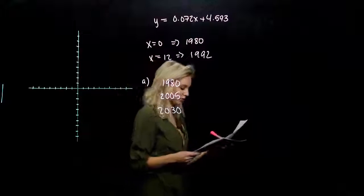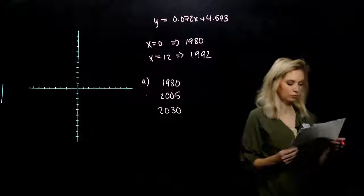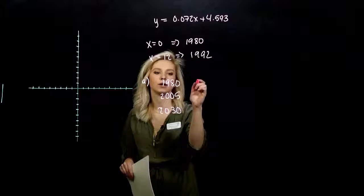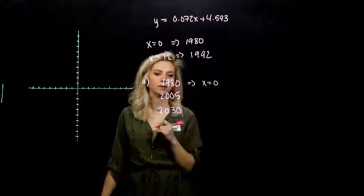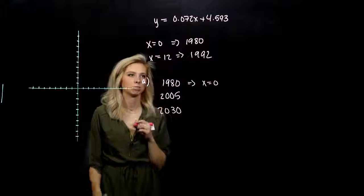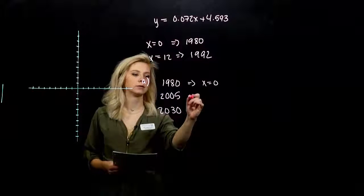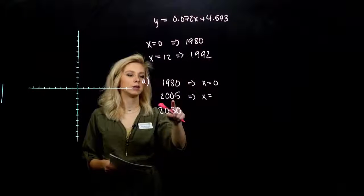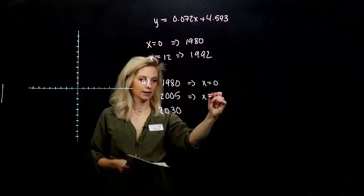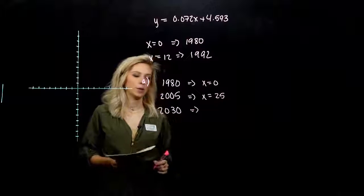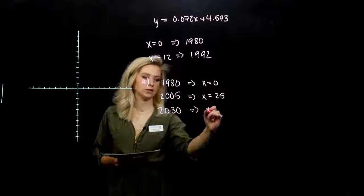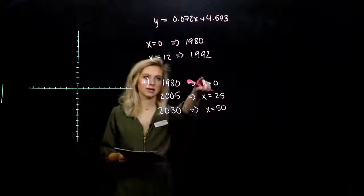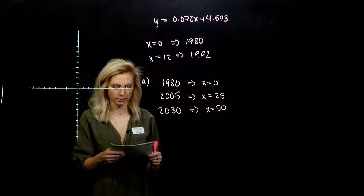The first thing that we need to figure out, what x values are associated to each of those years. First one's easy. We've already done it. This implies x has to be 0, then we're looking at 1980. 2005 is how many years after 1980? 20 will get me to 2000 and another 5. X has to be 25. 2030, we're looking at 50 years after 1980. So x has to be 50. We just take these x values, plug them into our model, and see what comes out for y.